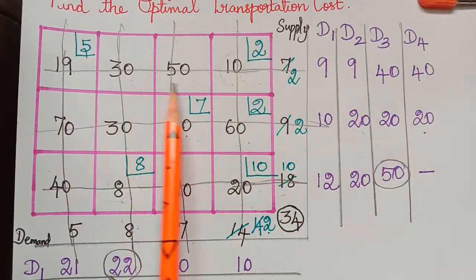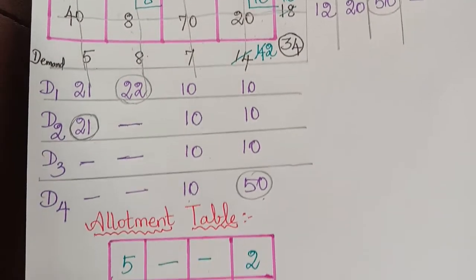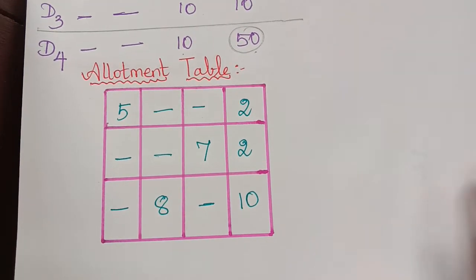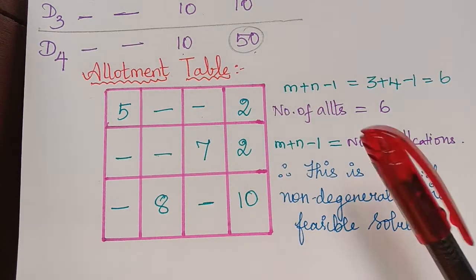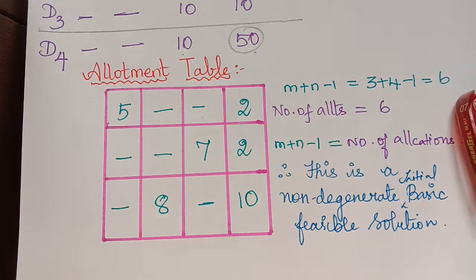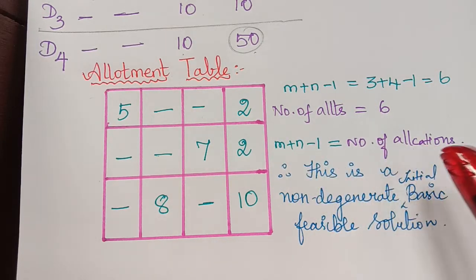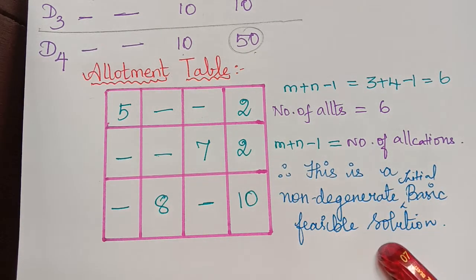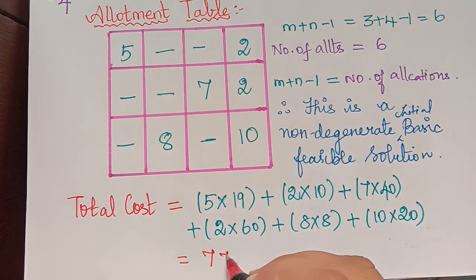With all cells allocated, we write the allocation table. We check for degeneracy: m plus n minus 1 equals 6, and the number of allocations is also 6. Since they are equal, this is a non-degenerate initial basic feasible solution. The total transportation cost is calculated and equals 779 units.